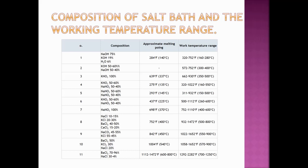Here you can see the composition of the salt bath and working temperature ranges. Various types of salt baths are available for different temperature ranges. For example, for a temperature range of around 160 to 280 degrees centigrade, you can use sodium hydroxide 75% and potassium hydroxide 19%. For a higher temperature range of 500 to 800 degrees centigrade, you can use sodium chloride 10–15%, potassium chloride 20–30%, barium chloride 40–50%, and calcium chloride 15–20%. The salt bath composition is selected according to the required working temperature range.